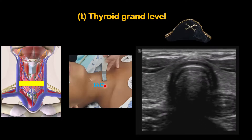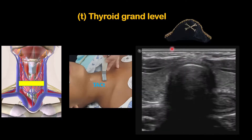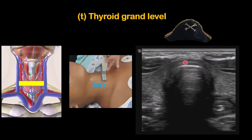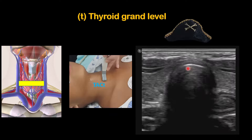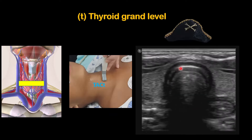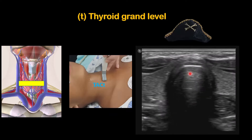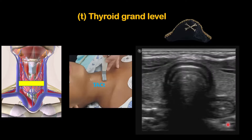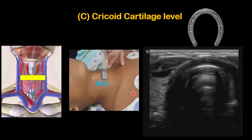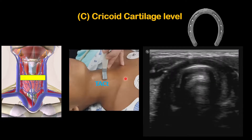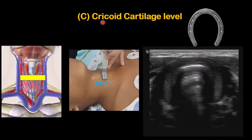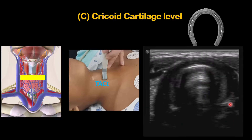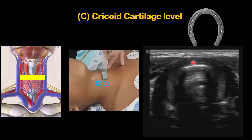When you put the probe at the thyroid gland level, you can see an image shaped like a pirate captain's head. The thyroid gland forms the outer parts, the central part is the airway — the trachea — and you can see a small round structure here which is the esophagus. Moving one level upward to the cricoid cartilage level, you can see a horseshoe-shaped black structure, which is the cricoid cartilage.